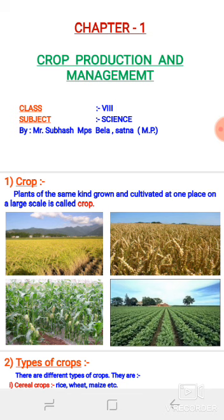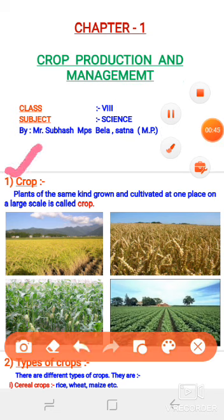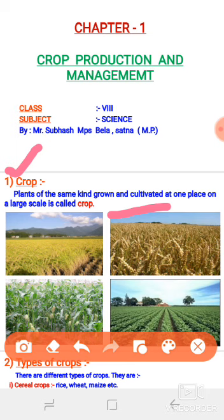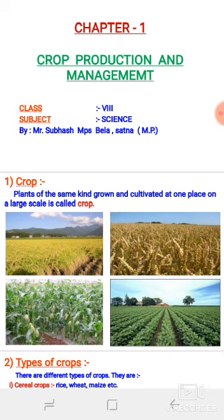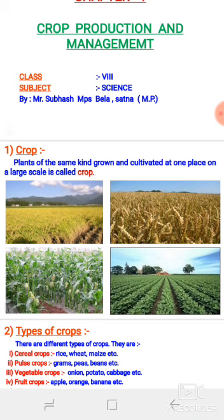The first chapter name is Crop Production and Management. When we talk about crop production and management, the first question that should strike in your mind is: what is the real meaning of crop? The definition is: plants of the same kind grown and cultivated at one place on a large scale is called a crop.